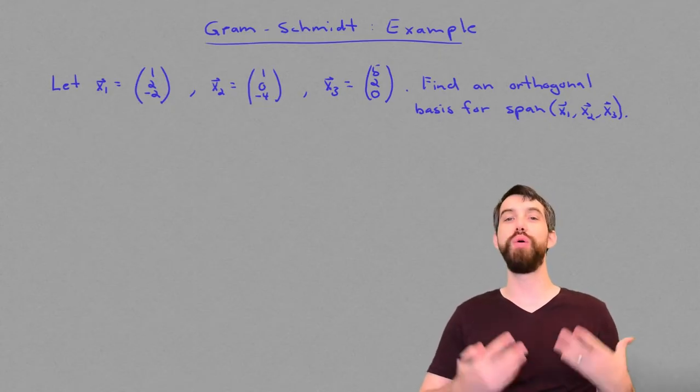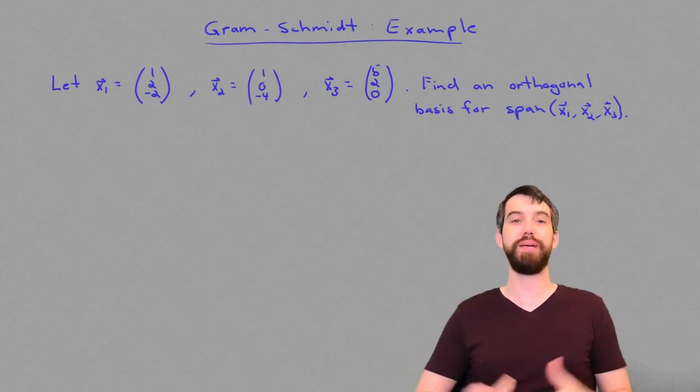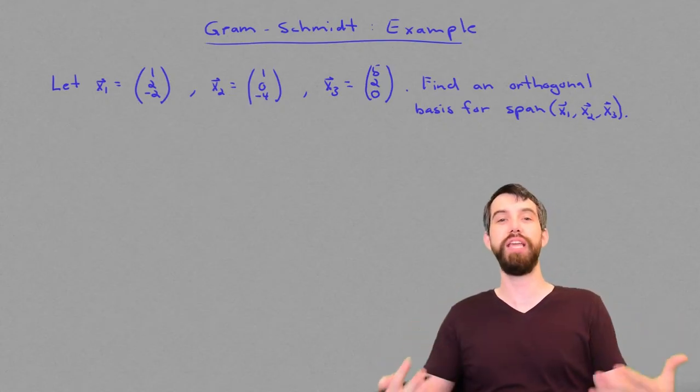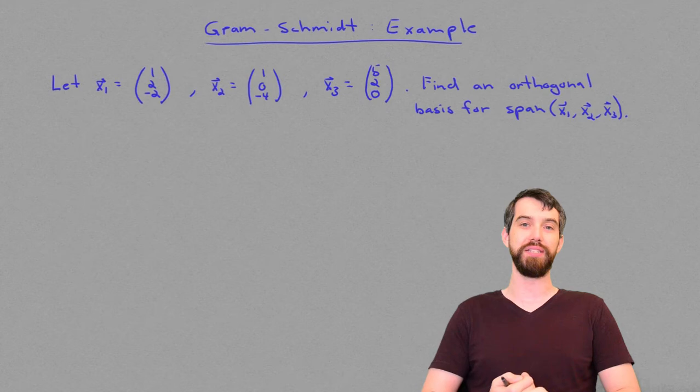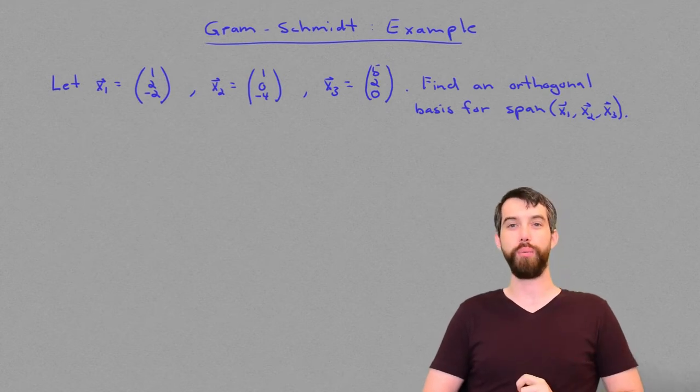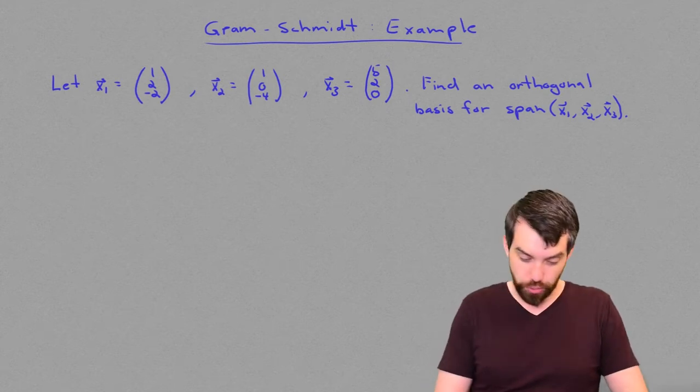As in, if my x1, x2, x3 are going to be a basis for some subspace w, I haven't changed the subspace. I still have a basis. It's just an orthogonal one now. So how did the process work?